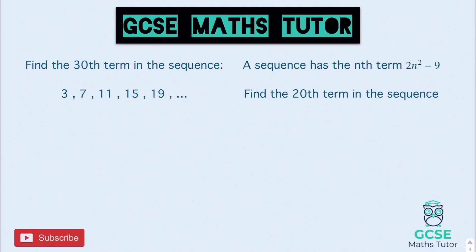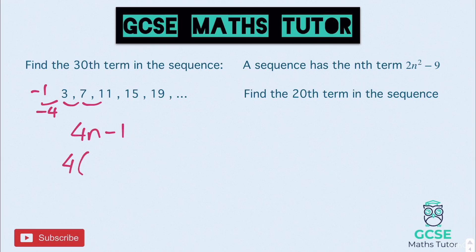Here are some questions for you to try — pause the video. For the first one: find the 30th term in the sequence. The sequence goes up in fours, so it's 4n. Going back four gives us minus one, so the nth term is 4n minus 1. Substituting 30: four times 30 is 120, take away 1 gives us 119 as the 30th term.